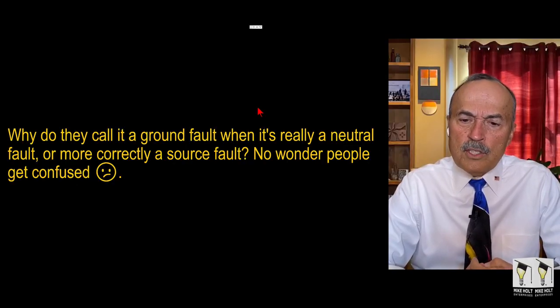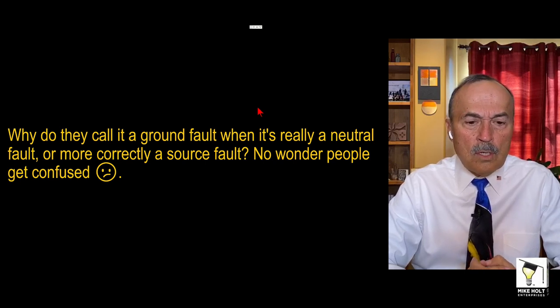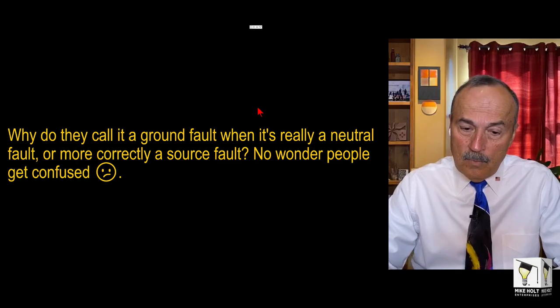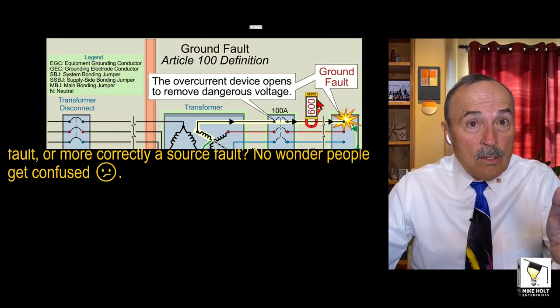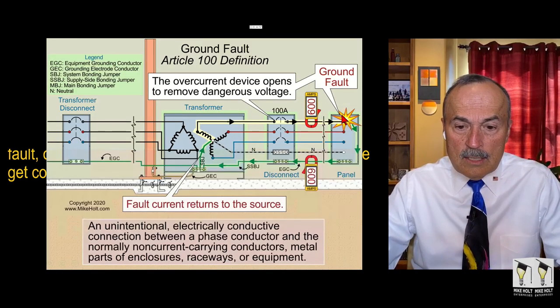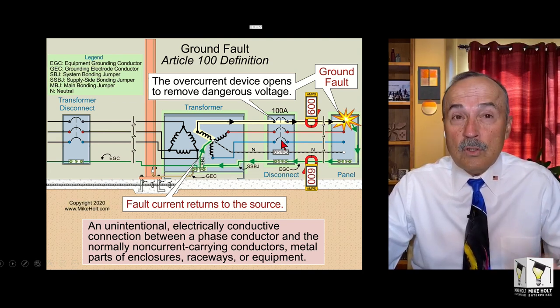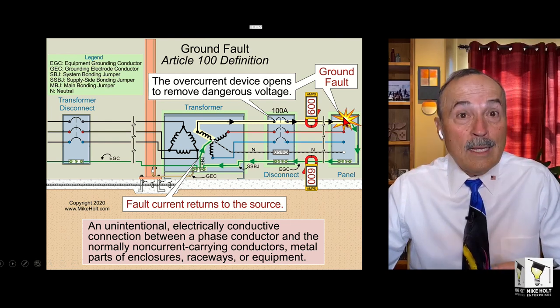Why did they call it a ground fault when it's really a neutral fault, or more correctly, a source fault? No wonder people get confused. Well, Article 100 definitions - we're talking about where electrons leave the source and there's a ground fault and there's an effective ground fault current path and return back to the source.